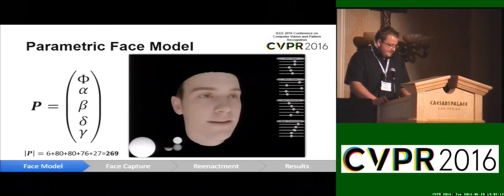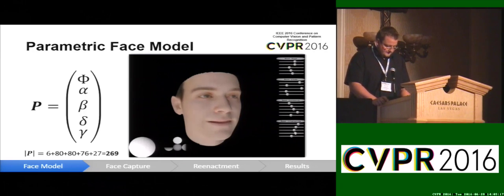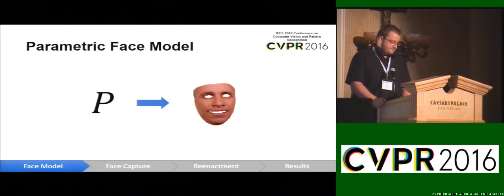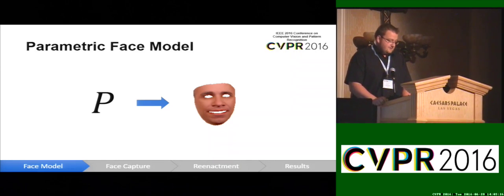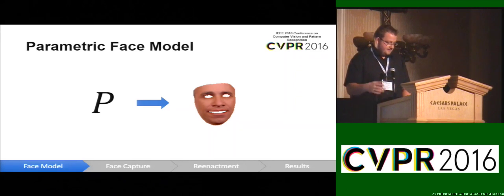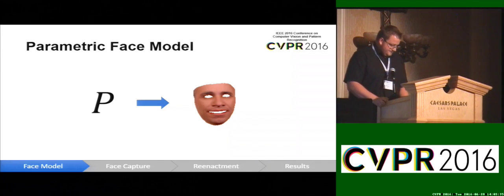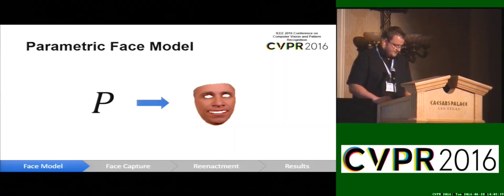In total we have around 270 parameters. When we have such a parameter vector p, we can use the standard graphics pipeline to rasterize a new image, and we also use the graphics card to evaluate gradients for this model.